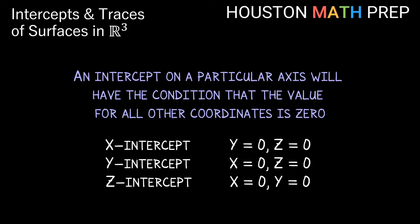So for an x-intercept, both the y and z coordinates will be zero. For a y-intercept, the x and z values will be zero, and for a z-intercept, the x and y will be zero.